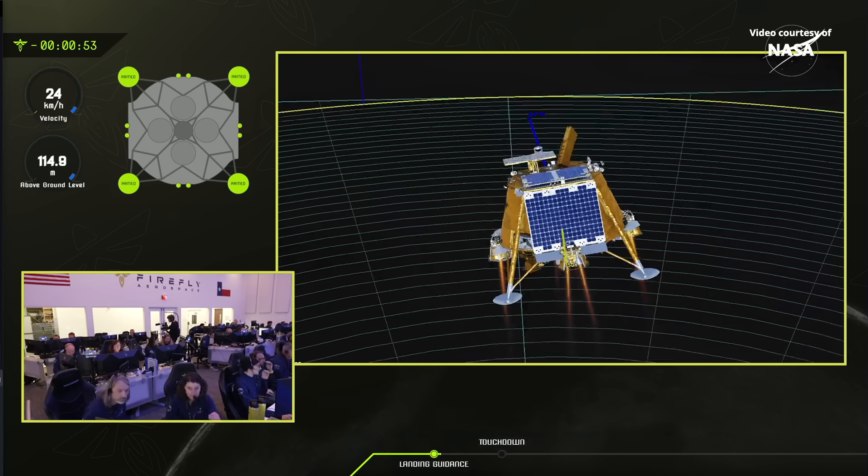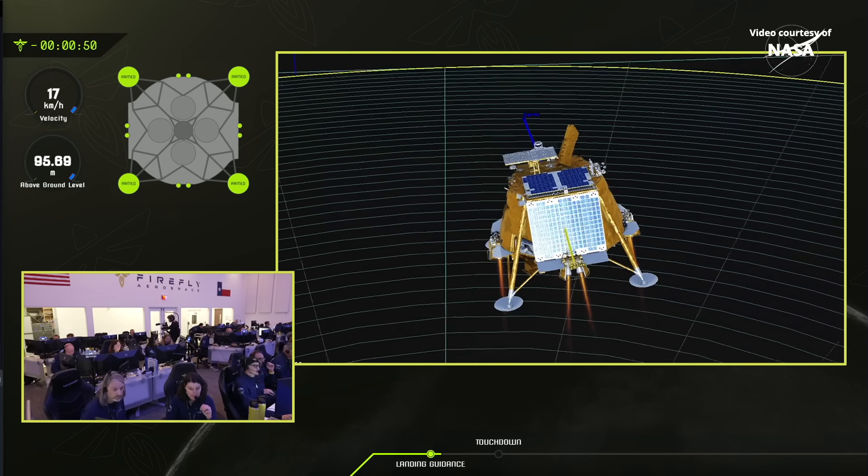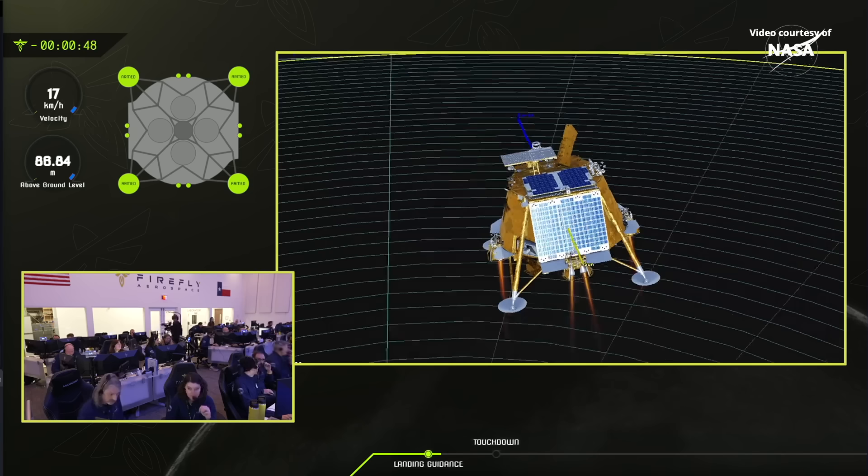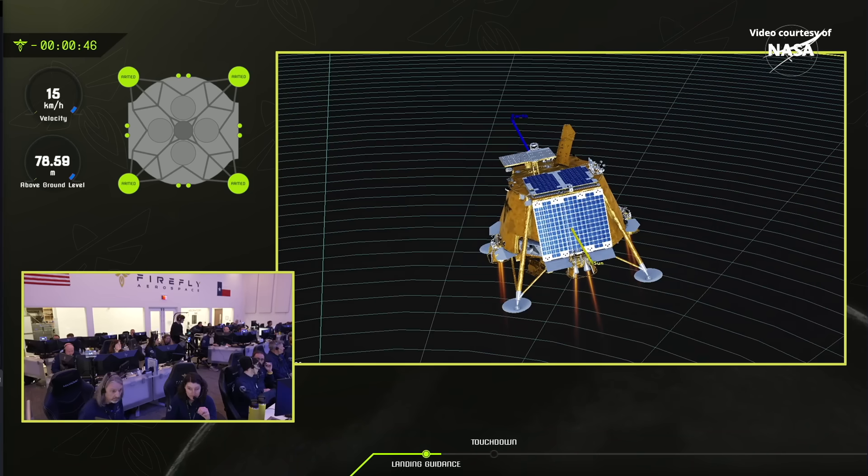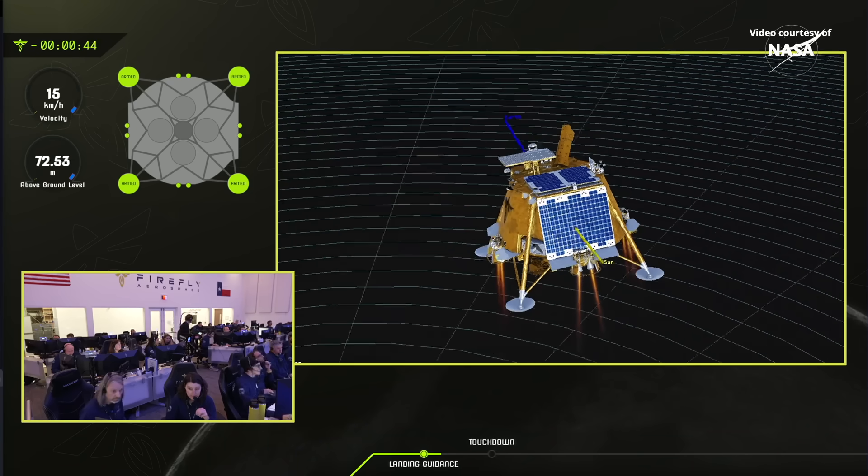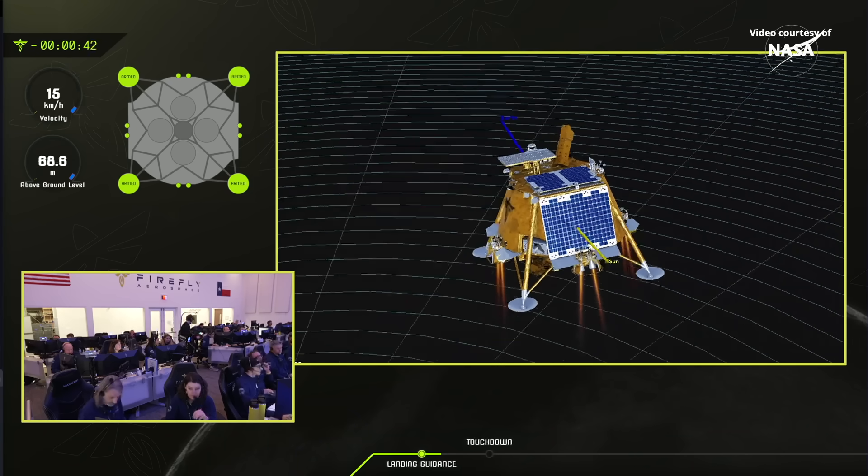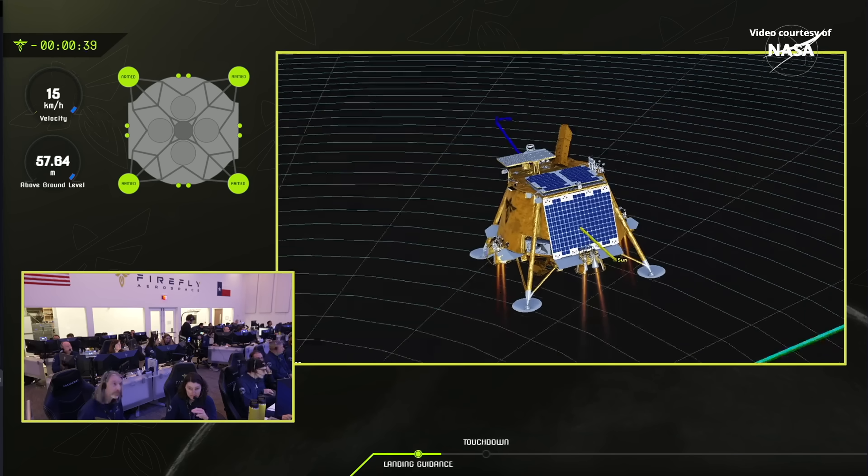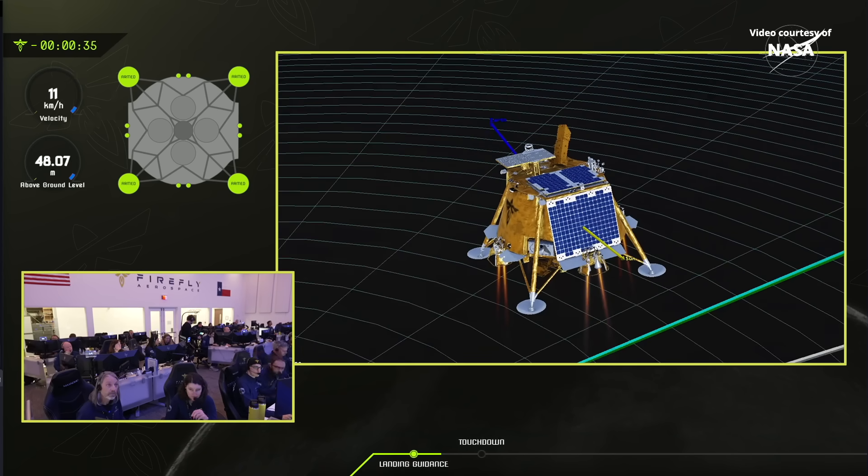You're going to hear a lot of call outs here about vision navigation solutions, laser rangefinder. Seconds remaining in terminal. 100 meters up. Health systems. Navigation filter is still healthy. Second hazard avoidance occurred. Five meters from previous target. 50 meters up.